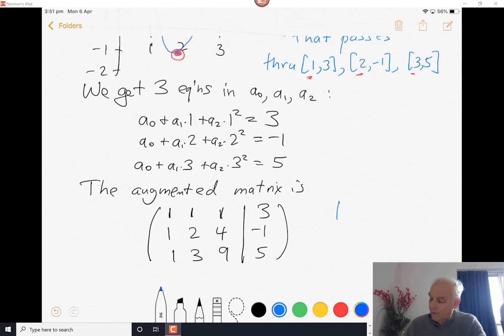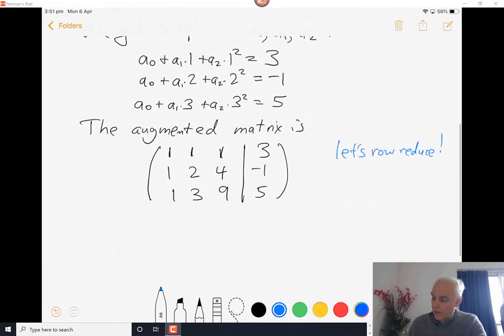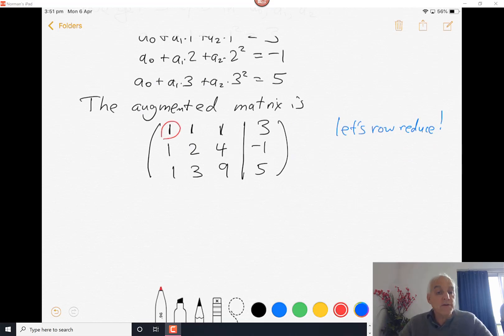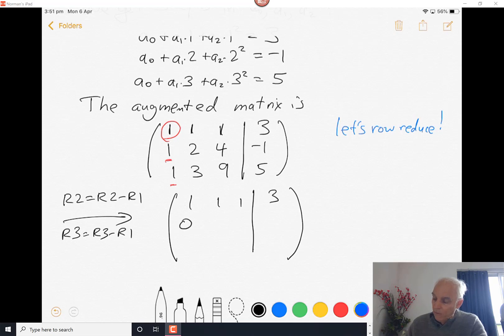So now let's row reduce this thing, which is always what we end up doing. We start with the top entry of the first non-zero column and we use that entry to eliminate everything below it. We do that by taking row 2 and subtracting row 1, and similarly the new row 3 is row 3 minus row 1. Then we get 1, 1, 1, and 3 - that stays where it is. And 1 minus 1 is 0, 2 minus 1 is 1, 4 minus 1 is 3, minus 1 minus 3 is minus 4. And the third row: 1 minus 1 is 0, 3 minus 1 is 2, 9 minus 1 is 8, 5 minus 3 is 2.